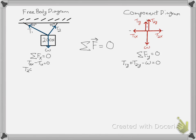Next, we can make our trigonometric substitutions. And we'll just go ahead and do this on both sides with both components, horizontal and vertical.